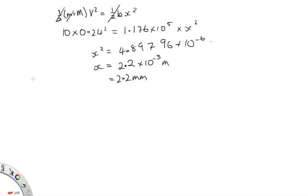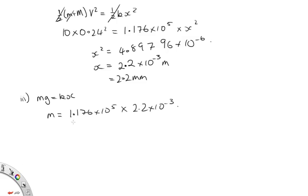Part 3 asks for the reading on the scale at this point. The scale converts spring compression to an equivalent mass using mg equals kx. So m equals kx over g, which is 1.176×10⁵ times 2.2×10⁻³, divided by 9.8. Solving on the calculator gives 27 kilograms — that is the equivalent mass reading shown on the scales.